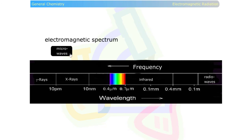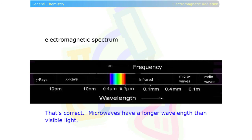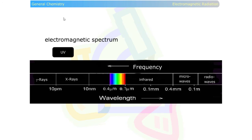Gamma rays. Gamma rays have a shorter wavelength than visible light. Microwaves. Microwaves have a longer wavelength than visible light. And ultraviolet radiation. Ultraviolet radiation has a shorter wavelength than visible light.